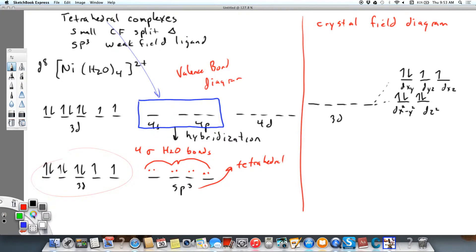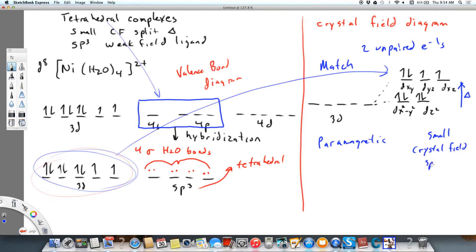The point here is if you look at the arrangement of the electrons, they match. We have two unpaired electrons, so this would be paramagnetic. We have a small crystal field split, and the reason for that is we have a weak field ligand.